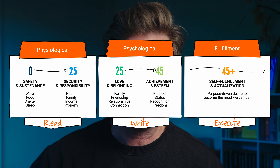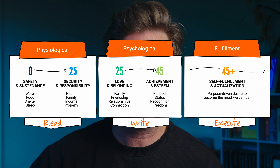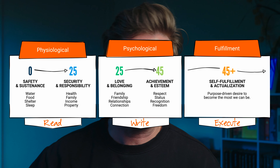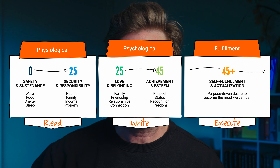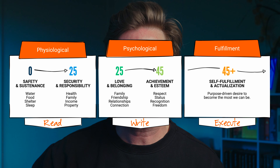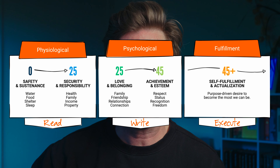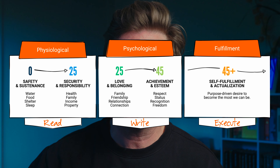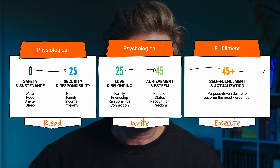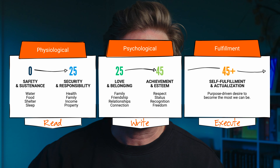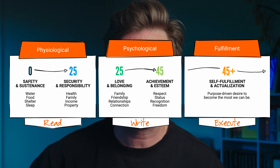As we age, the pursuit of stability and responsibility becomes prominent, encompassing aspects like healthcare, financial security and domestic stability. In our youth, these fundamental needs are typically met by caregivers, which allows us to focus on growth and learning. As we mature, we begin to independently address these needs, though they often center around our personal benefit. Progressing through life, our psychological needs intensify — particularly the need for love, belonging and establishing deeper connections with others.